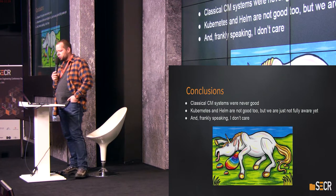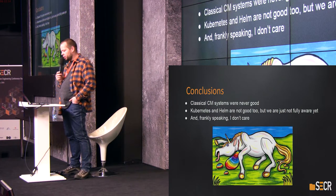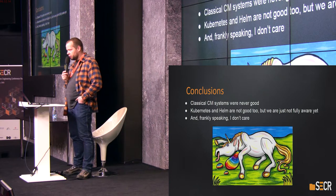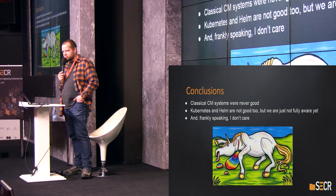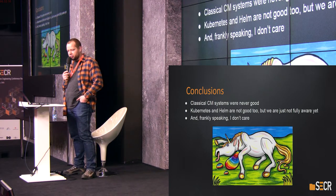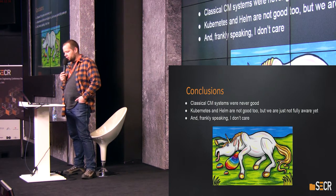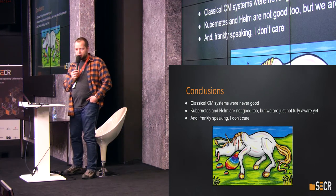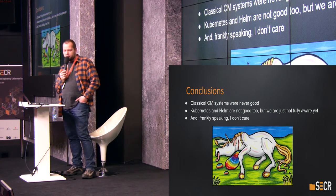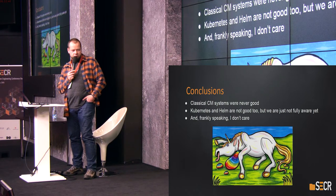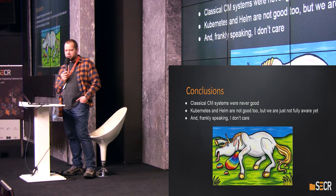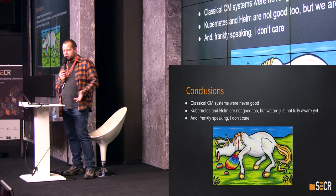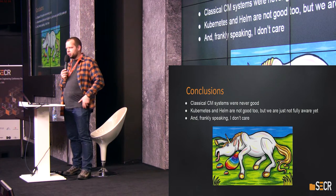My conclusions are very simple. Classical configuration management systems were broken, and Kubernetes and Helm are broken too — but they are just less broken than previously used configuration management tools. Right now I'm happy with Kubernetes and Helm because there is no magic and there are no unicorns. Let's just use Kubernetes and Helm and see what will appear next.